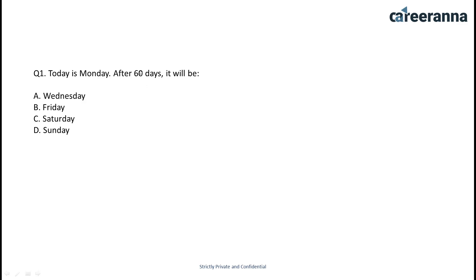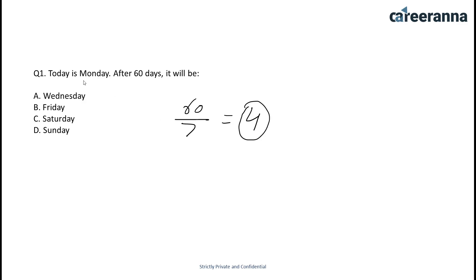you see there are 60 days, so you have to convert these days into weeks. We divide 60 by 7, because there are 7 days in a week, and we get the remainder which is 4 — because 7 times 8 is 56, and we are left with 4 days. So if today is Monday, after 4 days it will be Friday. So from Monday if we count 4 days, the answer is going to be B.